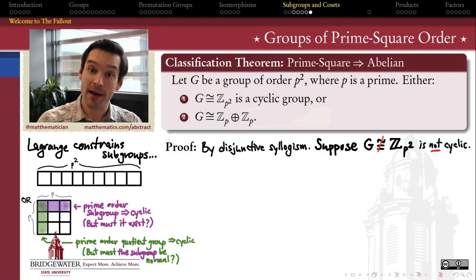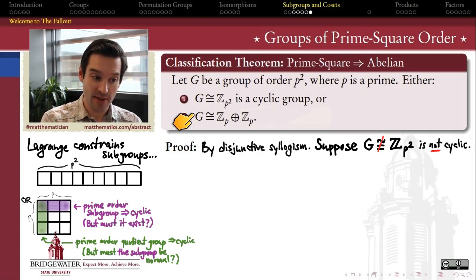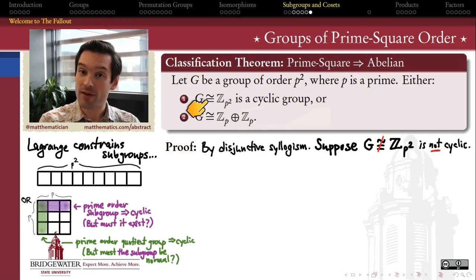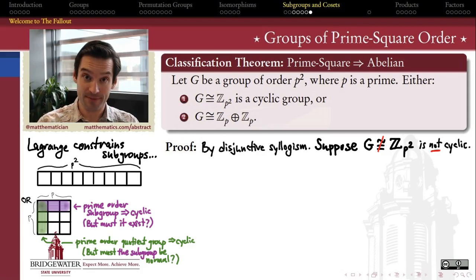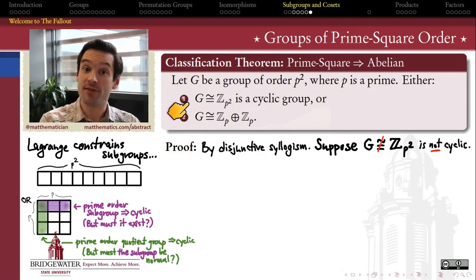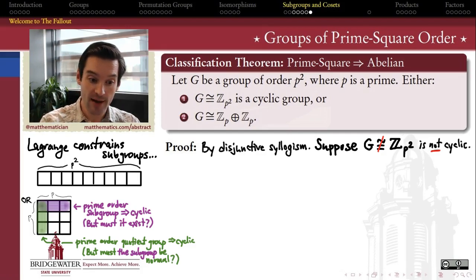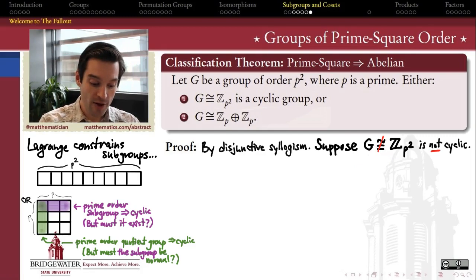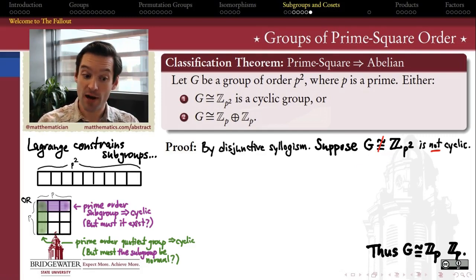We're going to prove this by a disjunctive syllogism, which is to say that if one of these cases does not hold, we will prove the other one must. So we'll begin by assuming that the first case does not hold: assume that G is not a cyclic group, so it's not isomorphic to Z mod p-squared. We therefore must show that G is isomorphic to the direct product of Z_p with Z_p.